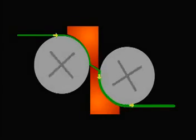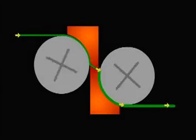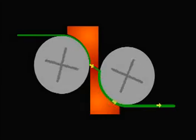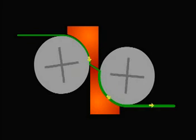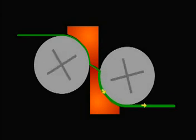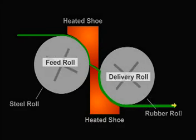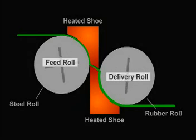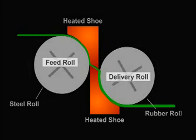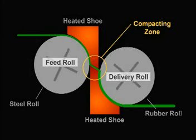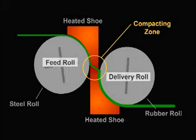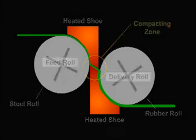There are two basic technologies for compaction. The first type is based on the heated roll and shoe principle. Steam is applied as fabric wraps around the heated feed roll, made of steel. Just enough moisture is applied so the fabric will move freely.